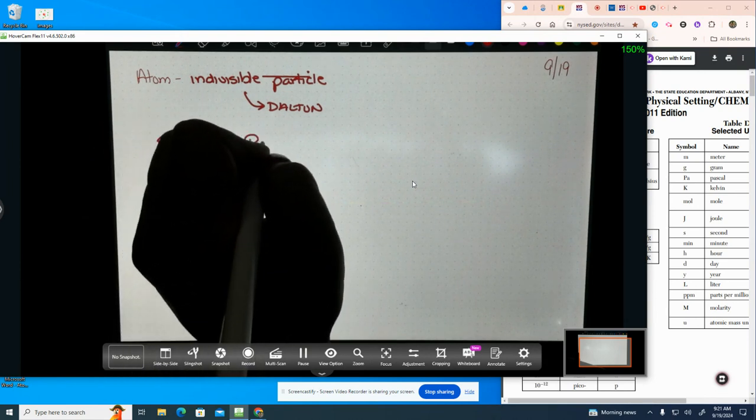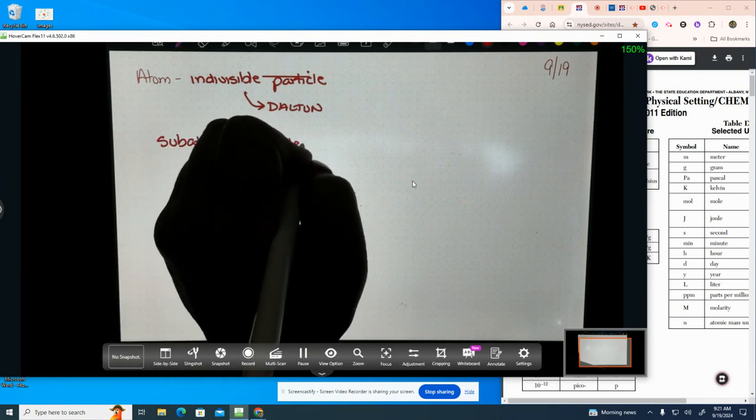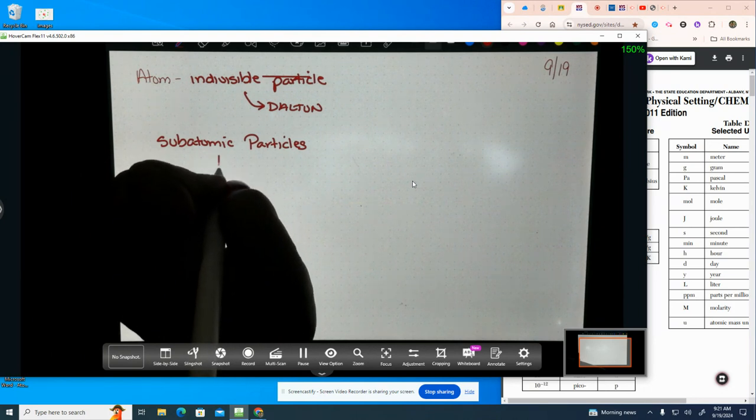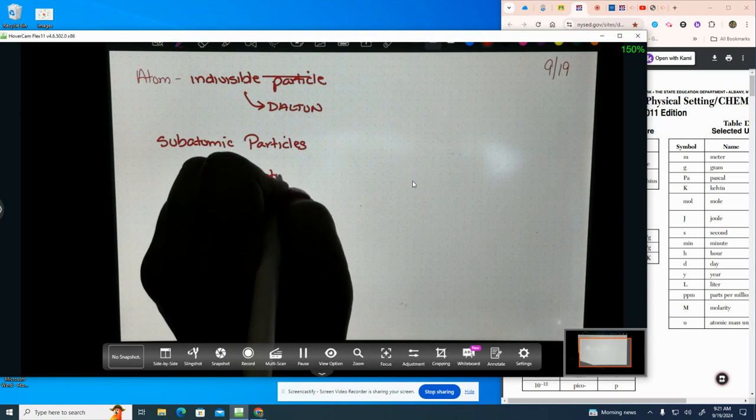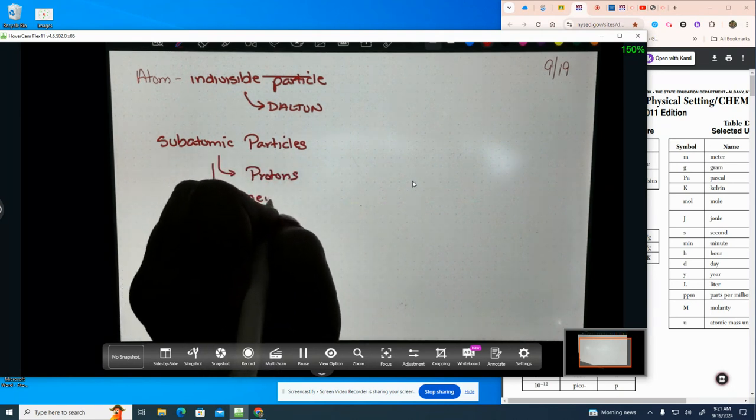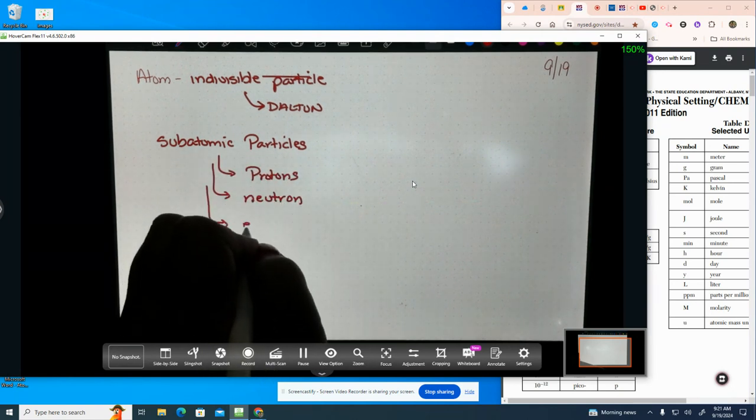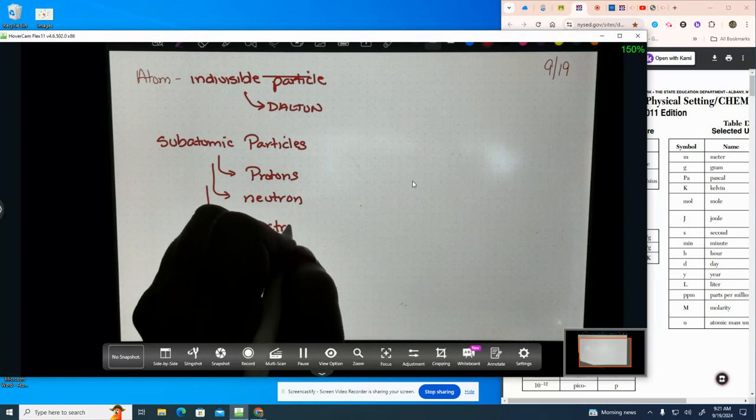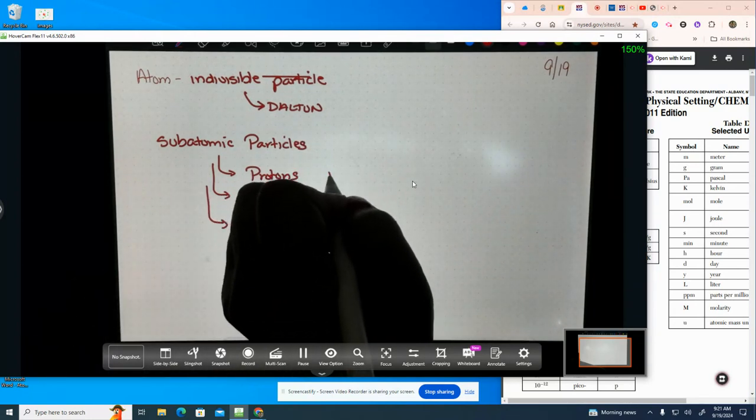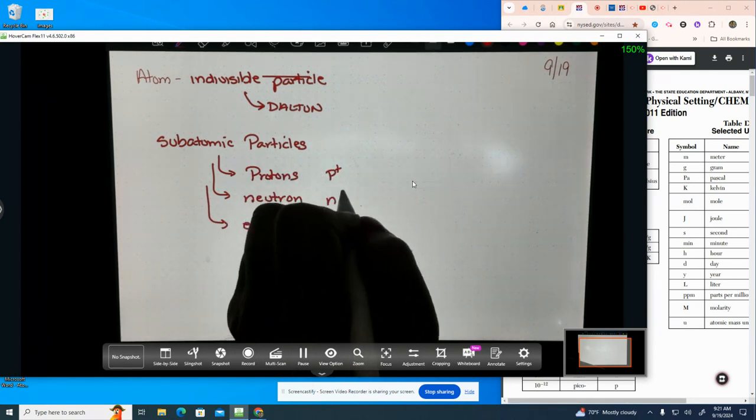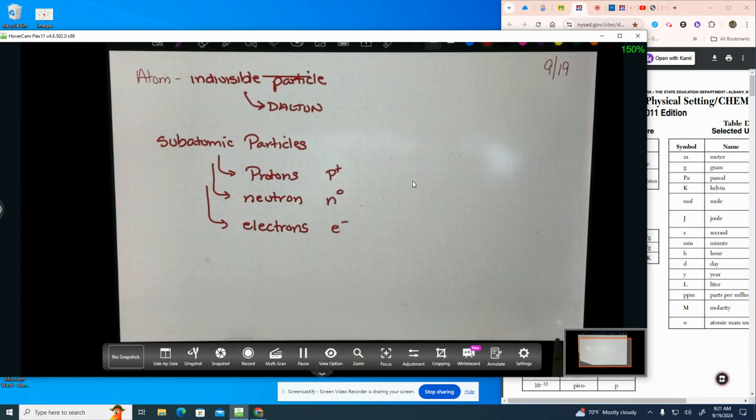It's made of what we call subatomic particles. And we kind of left off with them the other day. There are three subatomic particles. What are they? Protons, neutrons, electrons. The protons have a positive charge, the neutrons have a neutral charge, and the electrons have a negative charge.